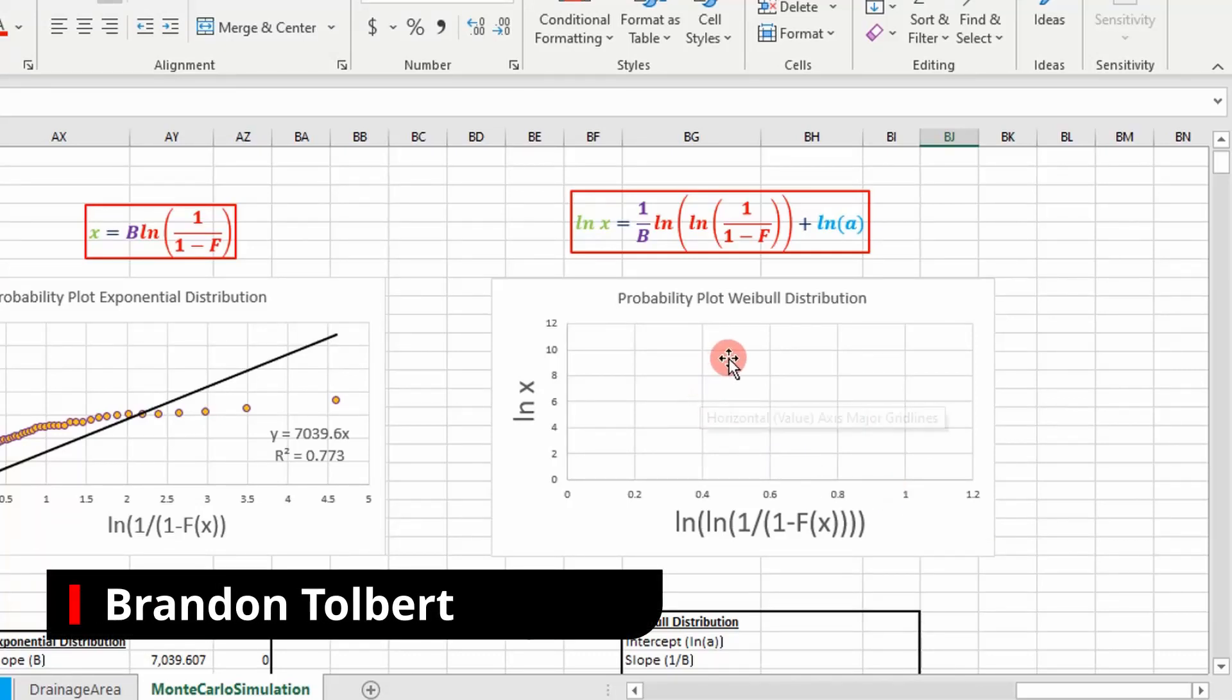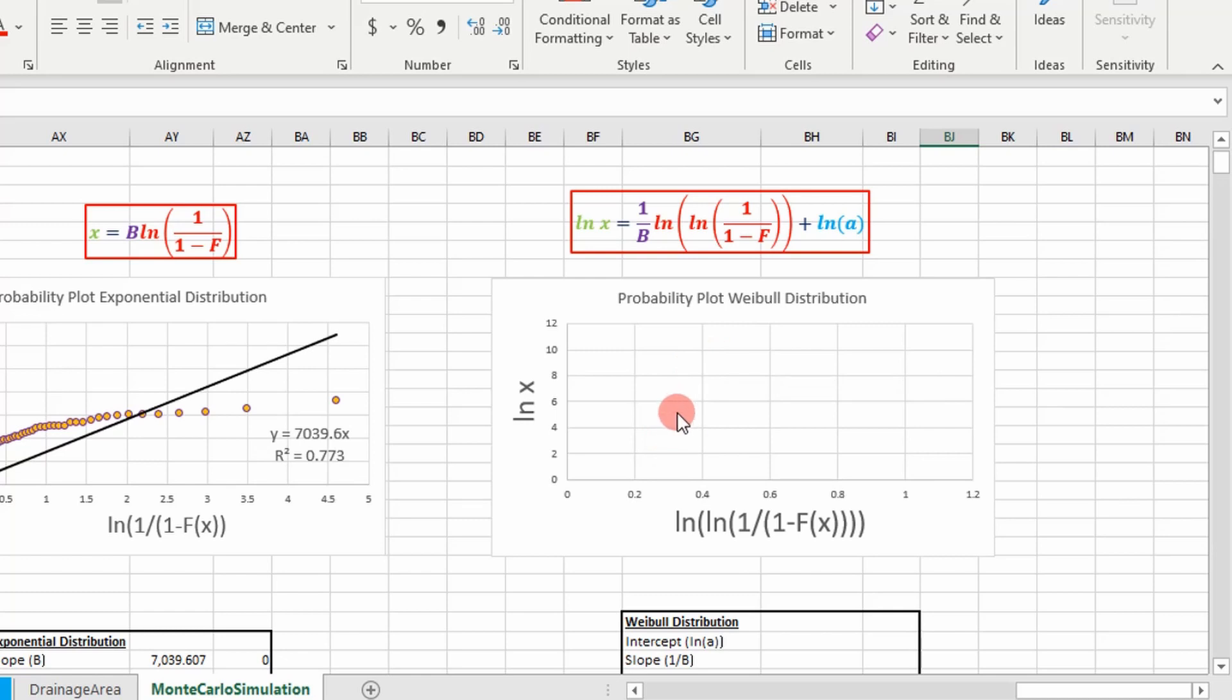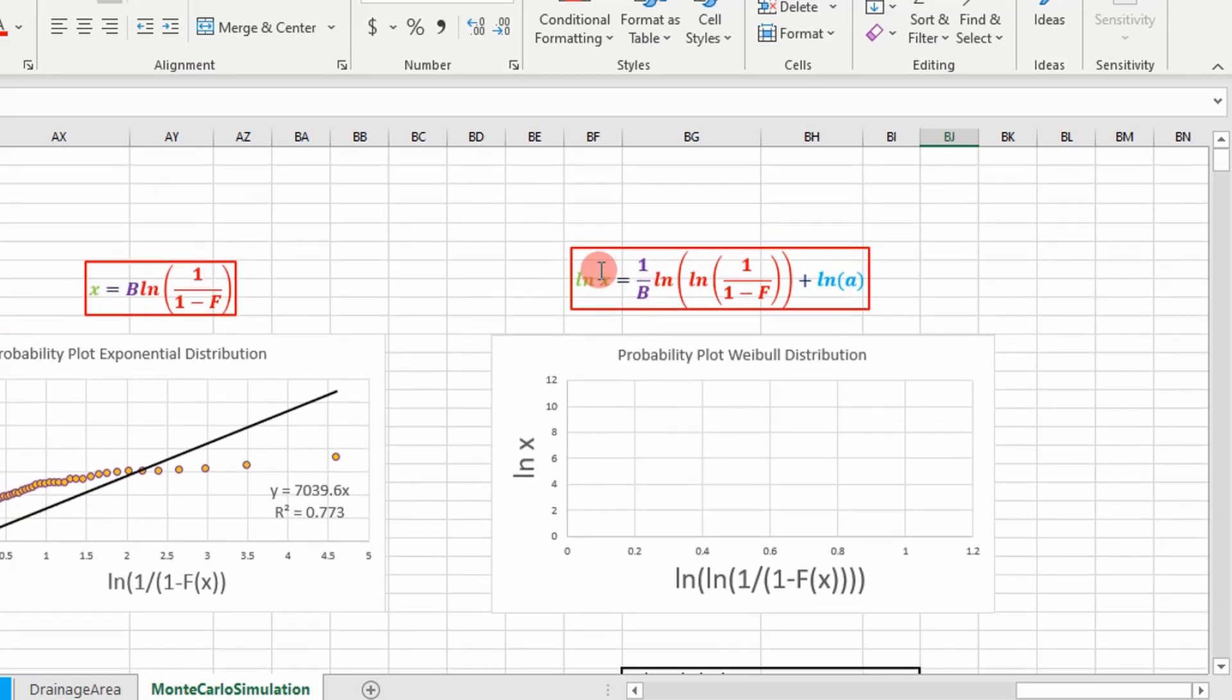Today we're going to use a Weibull distribution probability plot to fit a Weibull distribution to our data. You can see up here this is the equation we developed in the first video. It's the equation of a straight line with y equal to the natural log of our random variable, 1 over b as our slope, this monstrosity equation as our x, and the natural log of a as our y intercept.